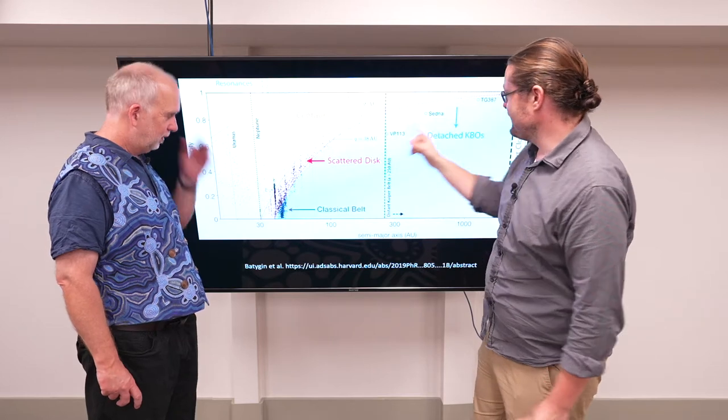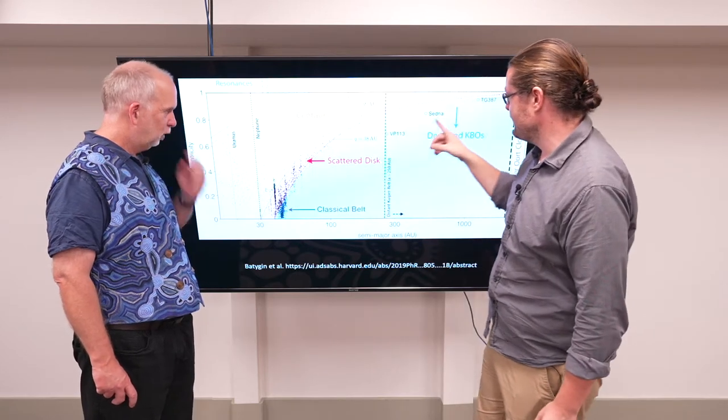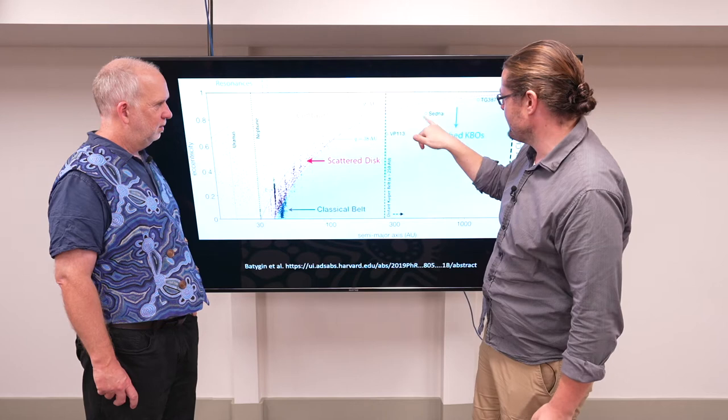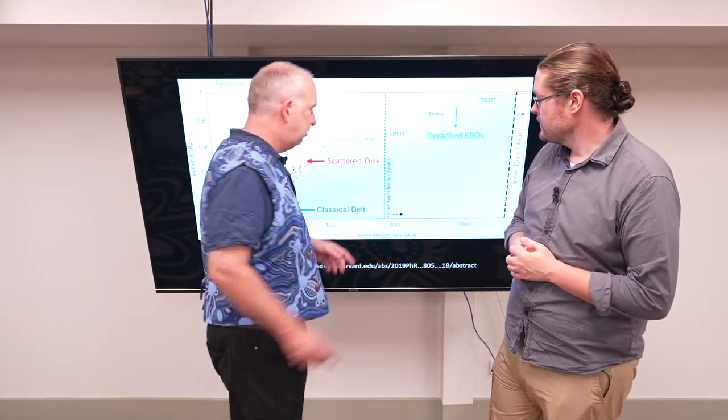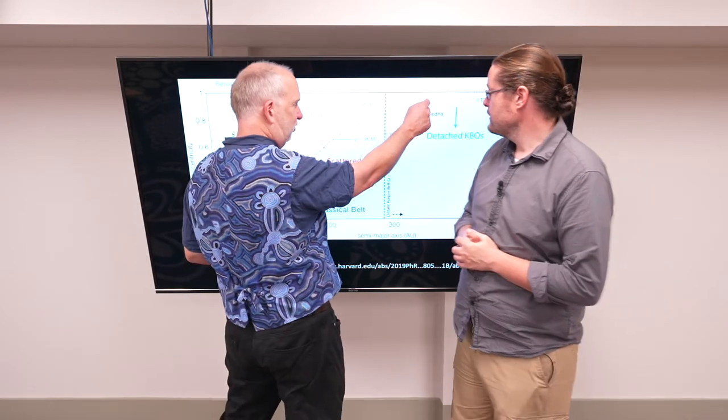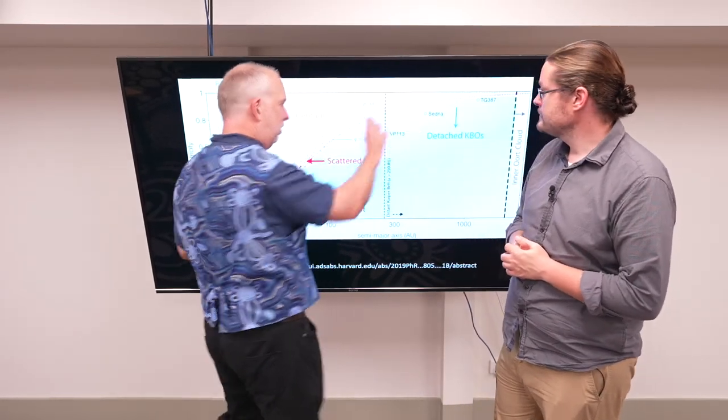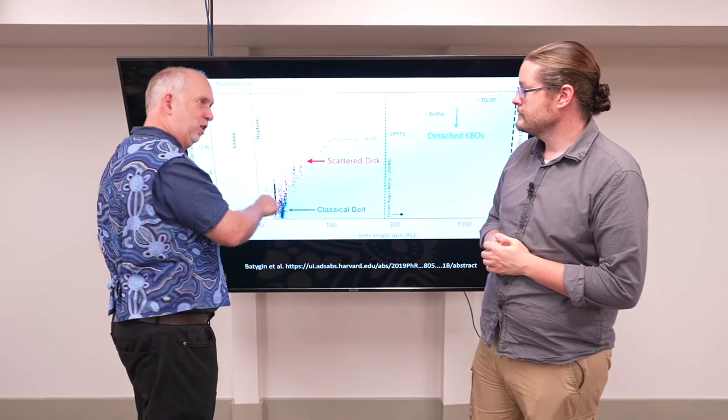But what about these? These are kind of really out there, especially things like Sedna and VP113. The issue with these ones is it's fine to have a large semi-major axis as long as you also have a very high eccentricity. Because that means it's a very elongated orbit. It still comes in close.